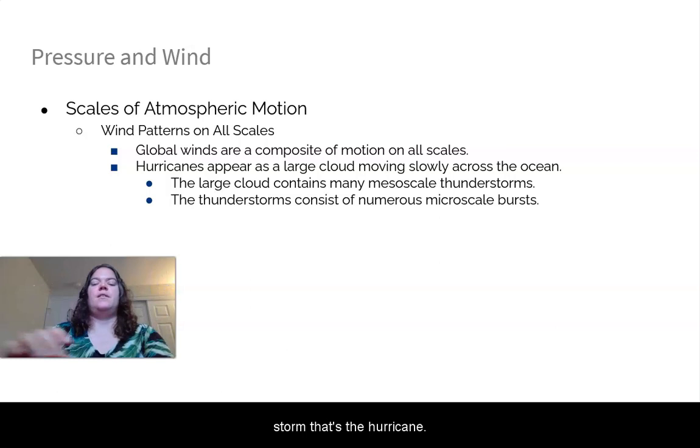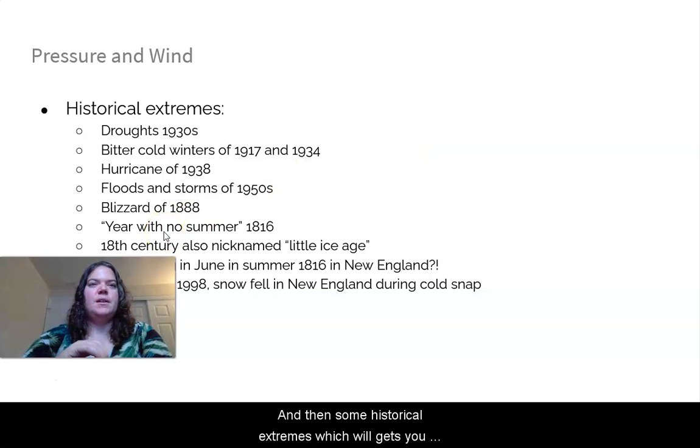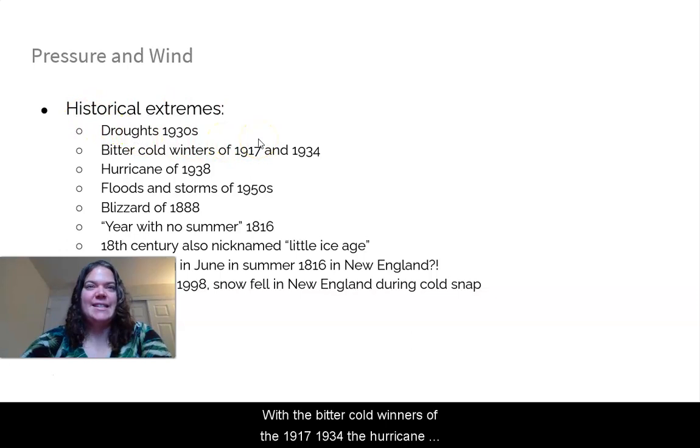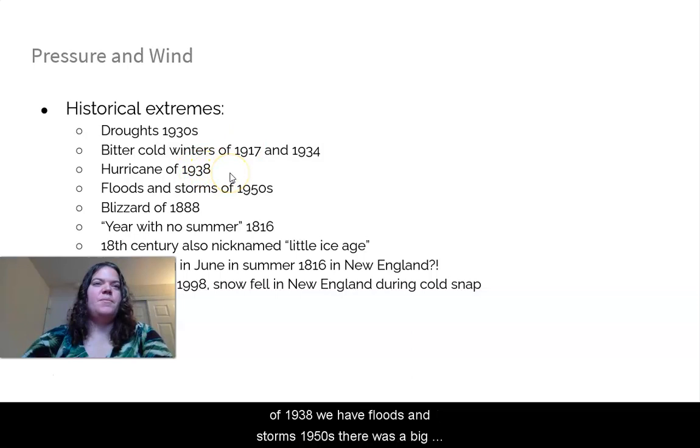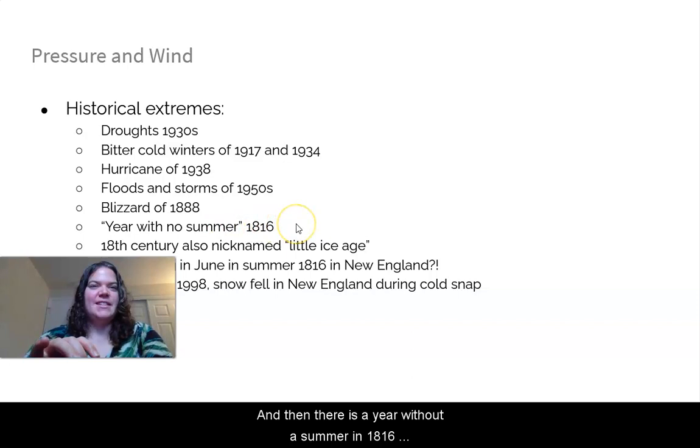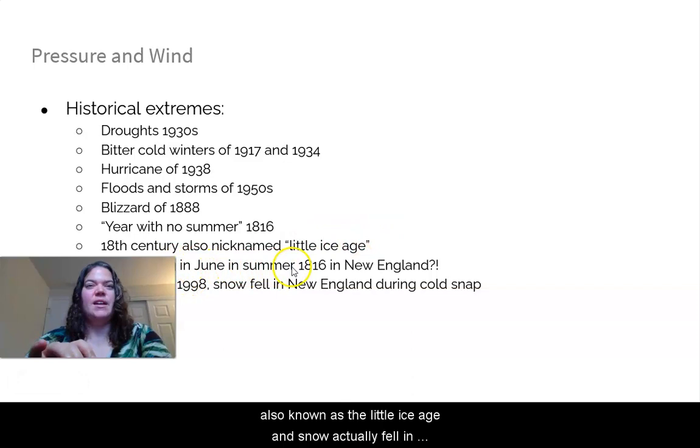So just to clarify here, global winds are actually a summation of all the smaller scales. So for example, if we look at a hurricane, it's a big, large cloud. But the large cloud actually contains many mesoscale thunderstorms. And then the thunderstorms have microscale bursts in them. So it's like a summing up of all the energy, all the scales to get that big storm that's the hurricane. And then some historical extremes. We had droughts in the 1930s. We had the bitter cold winters of 1917, 1934, the hurricane of 1938. We had floods and storms in the 1950s. There was a big blizzard in 1888. And then there was a year without a summer in 1816, also known as the Little Ice Age. And snow actually fell in June in summer 1816 as well. Plus there was a record heat in 1998. And snow fell in New England during a cold snap right after that.